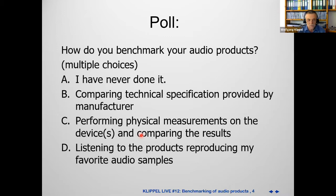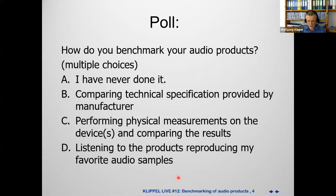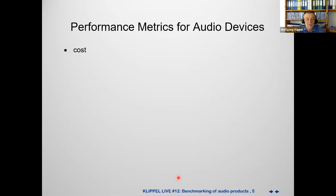So we are just at the right topic. Let's start with the characteristics — it's a measurement matrix for describing the performance of the audio device. Of course cost is set in place today. Then comes very primitive physical characteristics: size, volume, shape, weight, and the maximum output. That's already a little bit more challenging — that's a max SPL or the maximum output power, something like that.